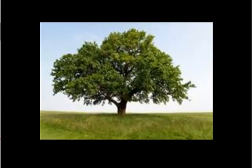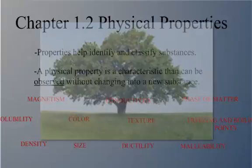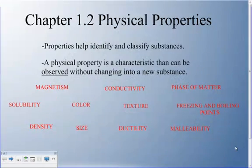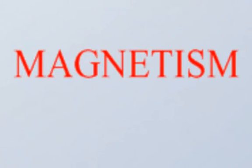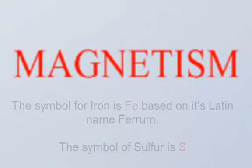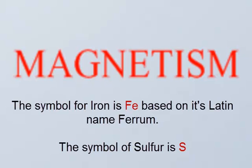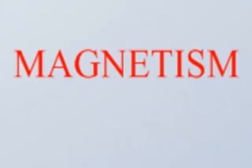You can also talk about texture. Let's get into some examples of physical properties — you're going to make a list in your notes. Magnetism is a physical property. We're going to do a lab where we take iron and sulfur: iron is magnetic and has that property, while sulfur does not. So iron has magnetism as one of its properties, and it identifies it as iron.